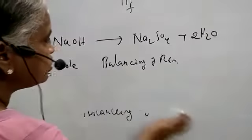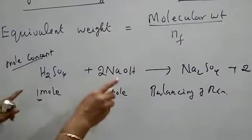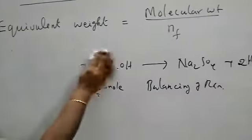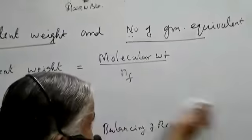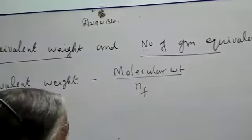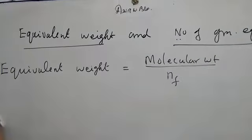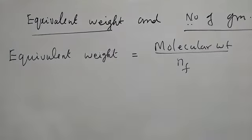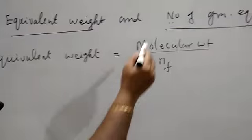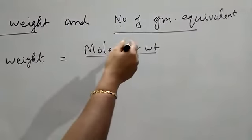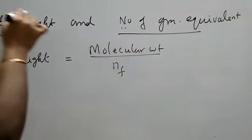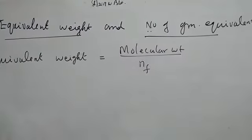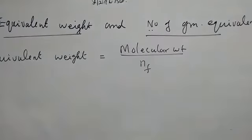This is the importance of the number of gram equivalents method, where balancing the equation — that is, stoichiometry — is not required. Whereas in the mole concept method, the equation should be balanced for complete knowledge. To find the number of gram equivalents, you should first know the equivalent weight.